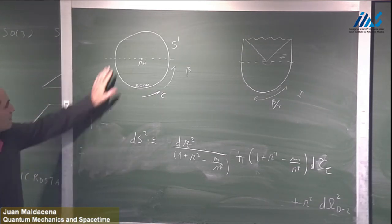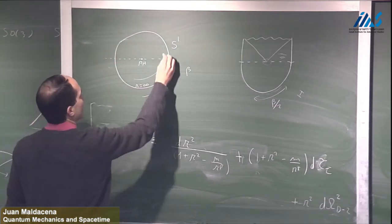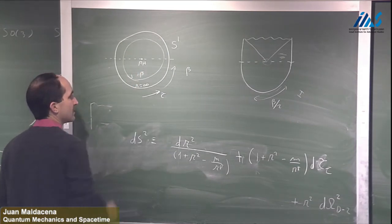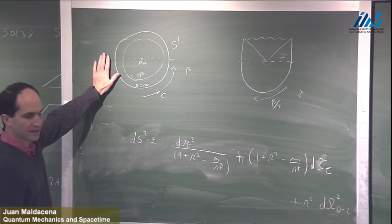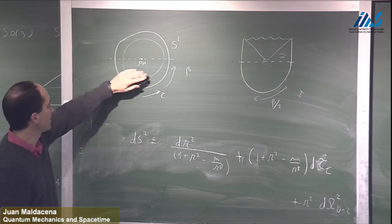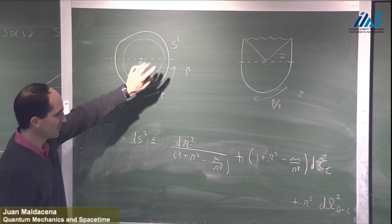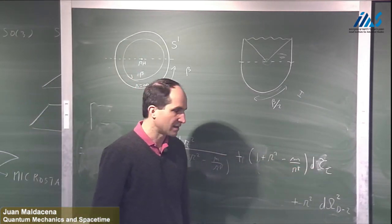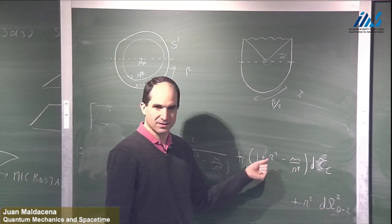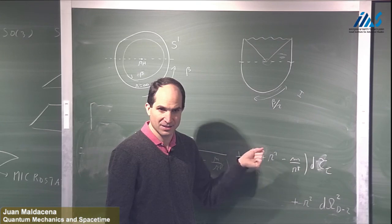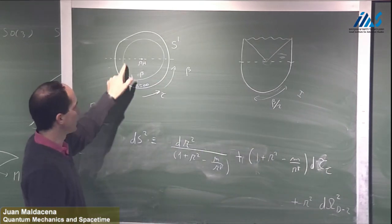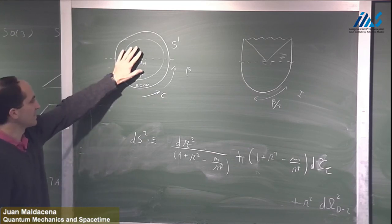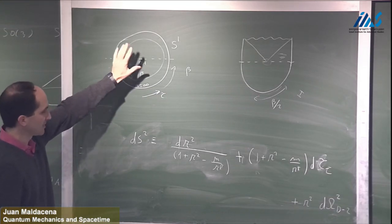The Euclidean time is a circle of radius beta. This space is purely Euclidean with a rotation symmetry — actually a translation symmetry in the metric — which becomes a rotation because the circle shrinks to zero at the origin. Imposing non-singularity at the origin determines the periodicity beta of the Euclidean time direction.